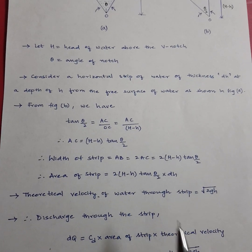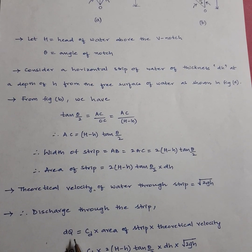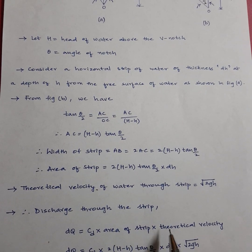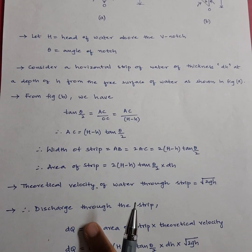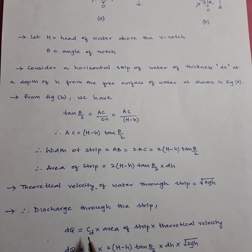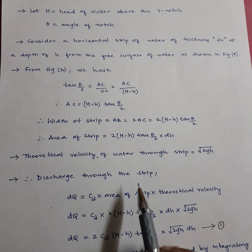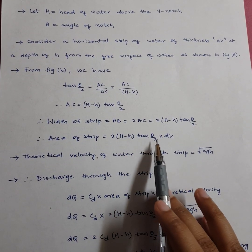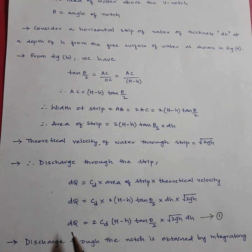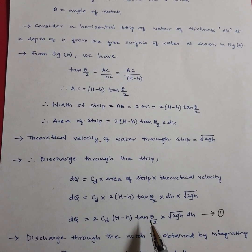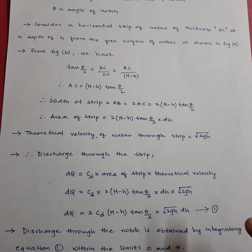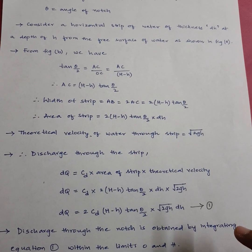The theoretical velocity is given by root(2gH). For actual discharge, we multiply by the coefficient of discharge CD. So dQ equals CD × area of strip × theoretical velocity, giving dQ = 2·CD·(H − h)·tan(theta/2)·root(2g·h)·dH. This is equation 1, giving discharge through the elementary strip.